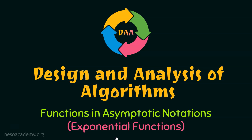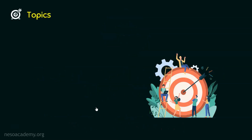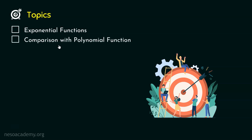Let's get started and see what are the topics. The first topic of this lecture is exponential functions. We will first understand what are exponential functions, and then we will compare exponential functions with polynomial functions. And finally, we will give the conclusion about different types of functions in asymptotic notations, concluding the discussion of all the types of functions with a graph.